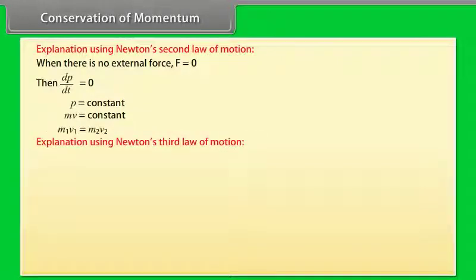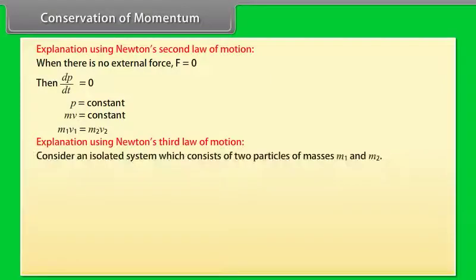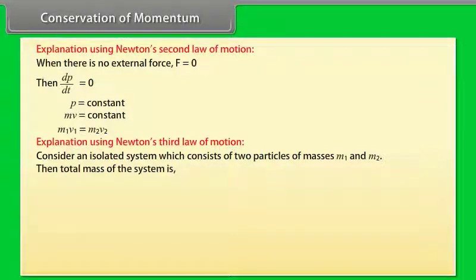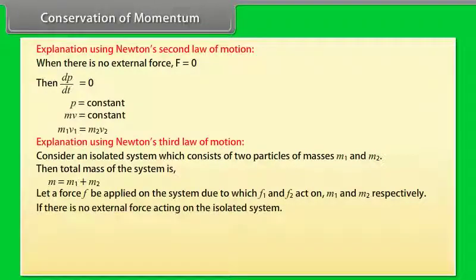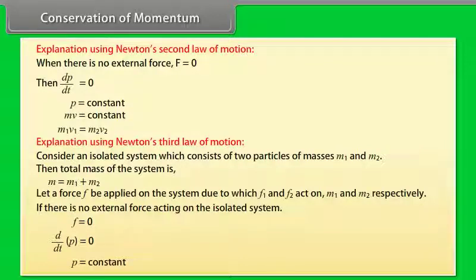Explanation using Newton's third law: Consider an isolated system of two particles of masses M1 and M2. Total mass M = M1 + M2. Let force F be applied, so F1 and F2 act on M1 and M2 respectively. If there is no external force, F = 0, so d/dt of P = 0, meaning P = constant. Hence the law of conservation of linear momentum is proved.